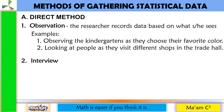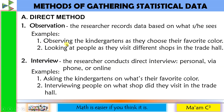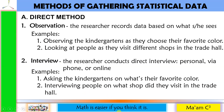The next way under direct method is through interview, where the researcher conducts direct interview. It could be personal, via phone, or online. For example, instead of observing, you will ask directly the kindergarteners about their favorite color, or instead of looking, you will interview people on what shop they visited in the trade hall.